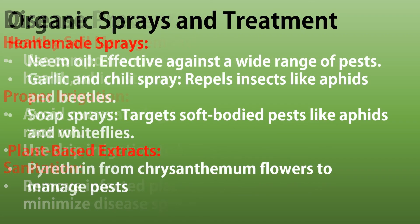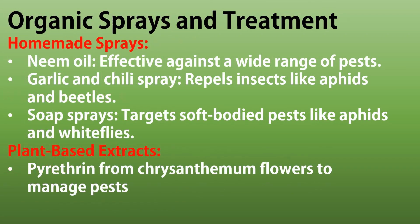Organic farming uses natural sprays and treatments to manage pests effectively. Neem oil works against a variety of pests, while garlic and chili sprays repel insects like aphids and beetles. Soap sprays are ideal for soft-bodied pests such as aphids and whiteflies. Additionally, plant-based extracts like pyrethrin from chrysanthemum flowers provide an eco-friendly solution for pest control.